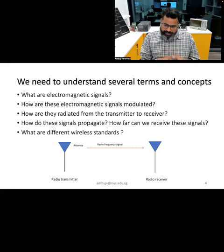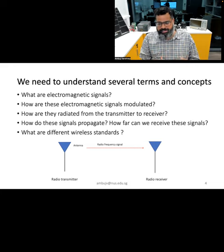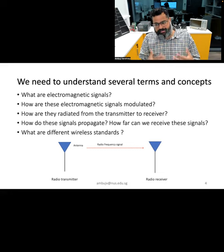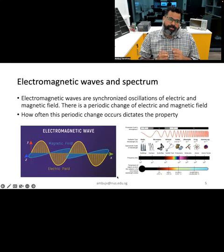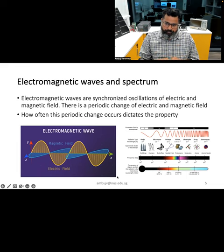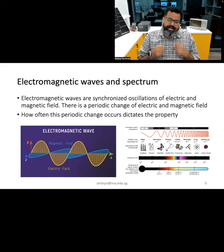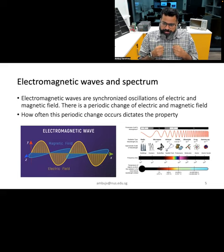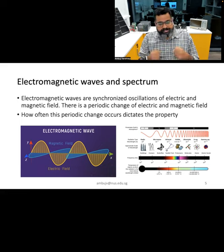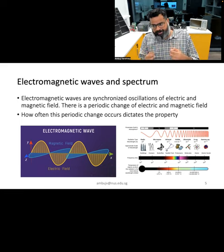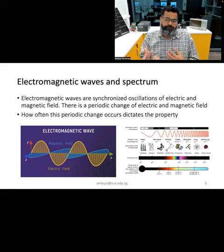A comprehensive understanding of these concepts gives us a clear picture of how wireless communication is achieved and how it is affected by different parameters in the environment. We will try to understand these topics in this and the upcoming lectures. Let's start by looking at electromagnetic waves and the electromagnetic spectrum. Electromagnetic waves are a form of energy that can travel through space, including through vacuum, without the need for any medium.